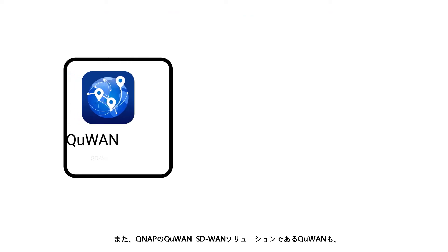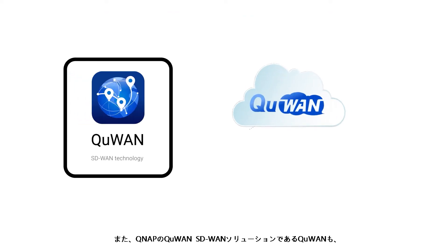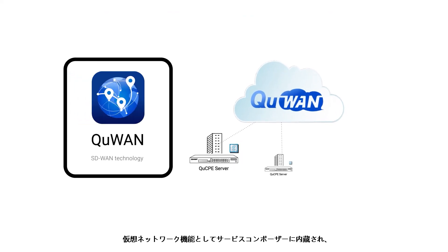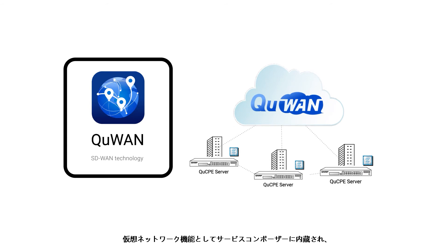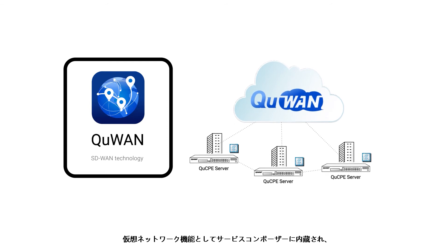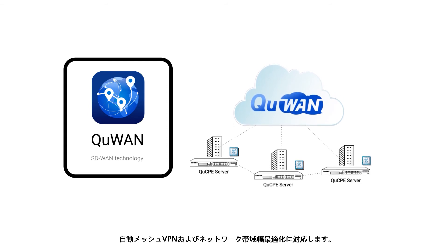QWAN, QNAP's SD-WAN solution, is also built into the Service Composer as a virtual network function for auto-mesh VPN and network bandwidth optimization.